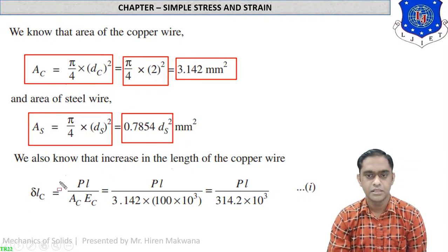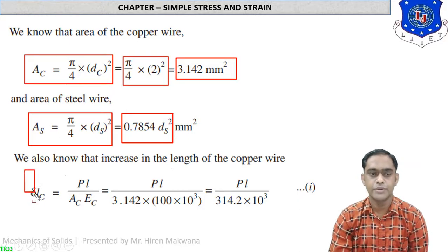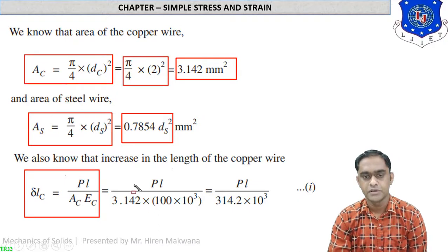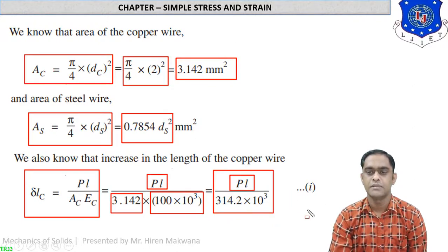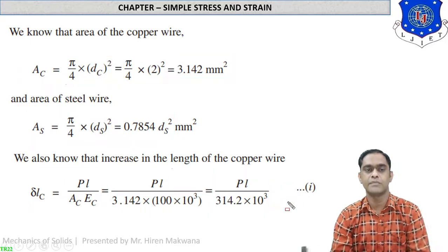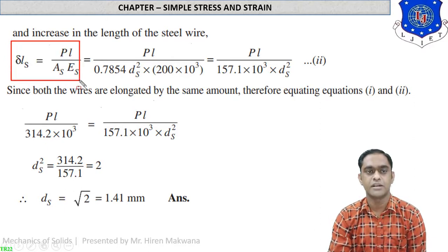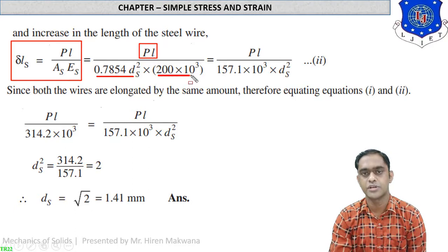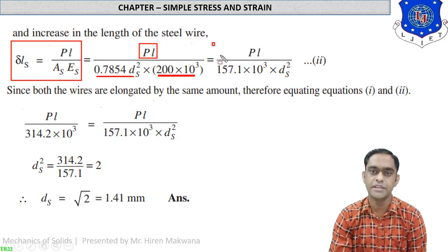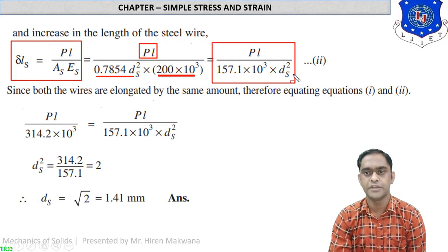Starting with the formula delta_l = PL / (AE) for copper: delta_l_c = PL / (3.142 × 100 × 10³) = PL / (314.2 × 10³) — call this equation 1. For steel: delta_l_s = PL / (A_s × E_s) = PL / (d_s² × (π/4) × 200 × 10³) = PL / (157.1 × 10³ × d_s²) — call this equation 2.